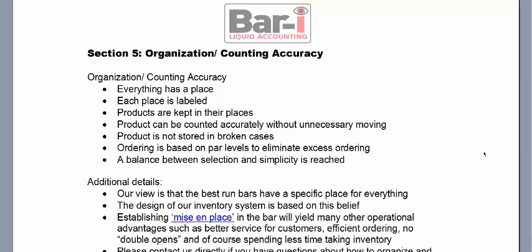Section 5: Organization and Counting Accuracy. We originally called this just 'organization,' and the reason it's so important is it saves you a lot of time and helps you be more accurate when counting. Most bars, honestly, are not terribly well organized — things end up where they end up rather than there being any conscious thought. What we've found is that it always makes sense to be better organized, to have some thought about where you put things, and it will yield a lot of advantages.